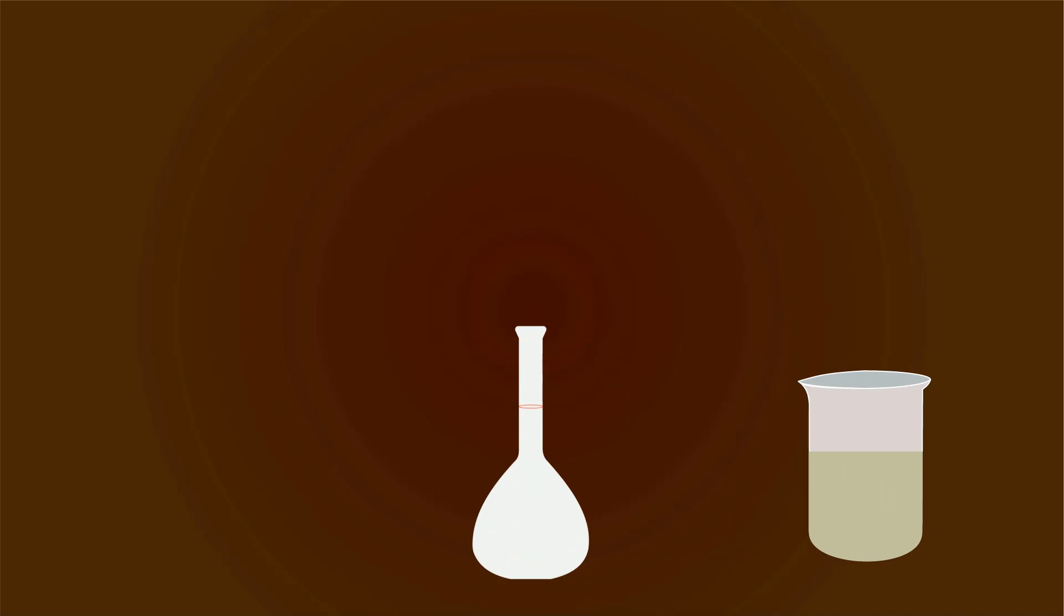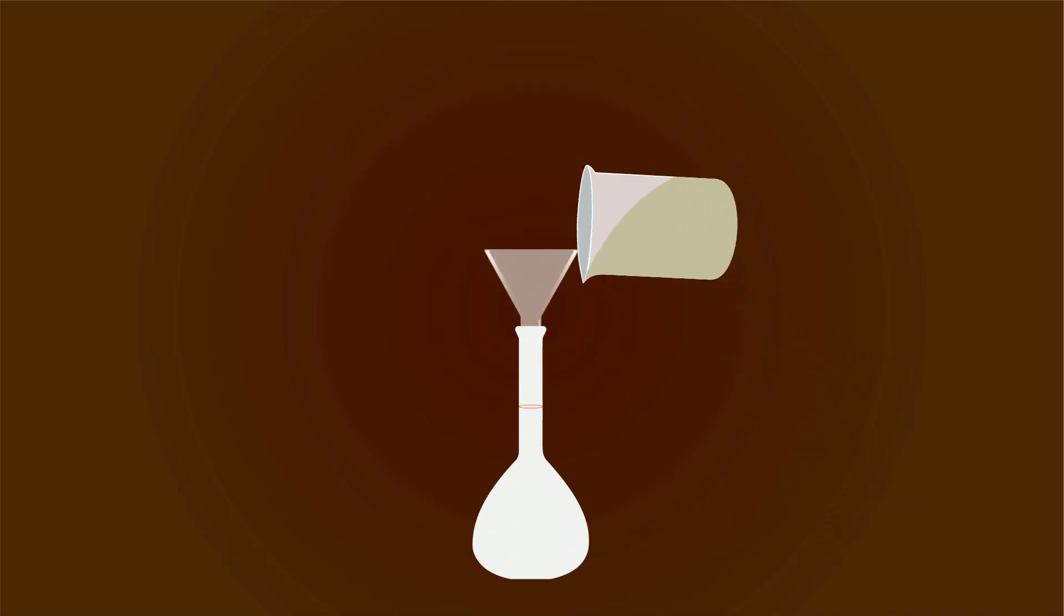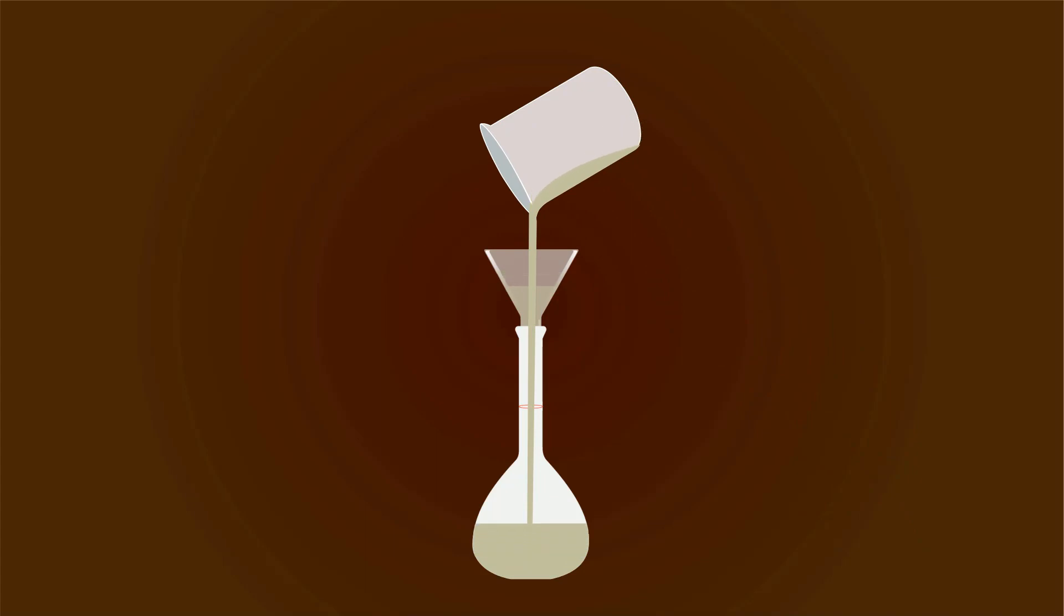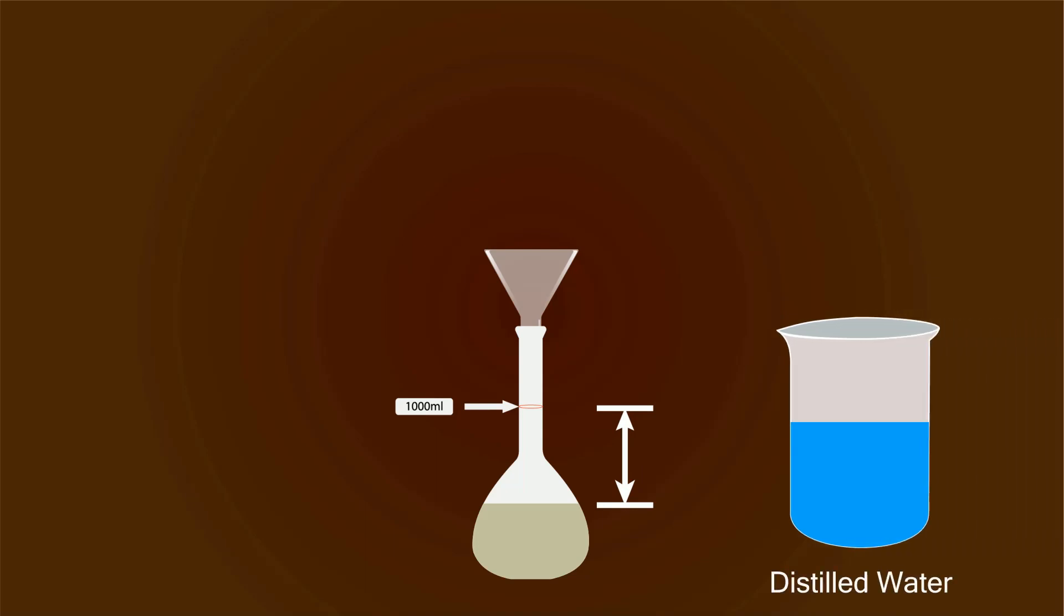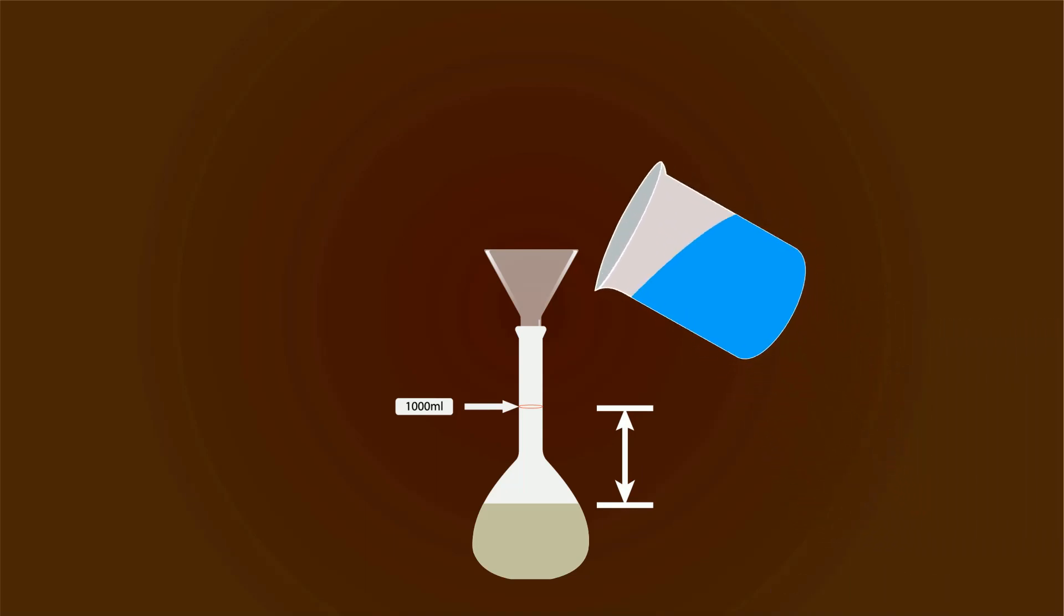Now take a volumetric flask of 1000 milliliters and put a funnel on the top. Start pouring down the solution. You have to fill it up to the red mark of 1000 milliliters. So for that you can add more distilled water into the volumetric flask. Start adding more distilled water up to the red mark.